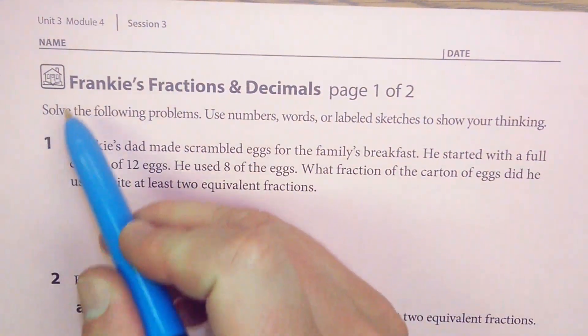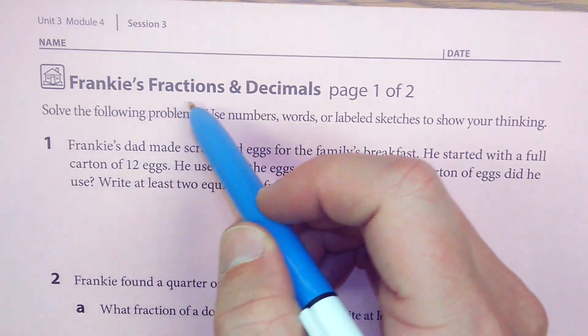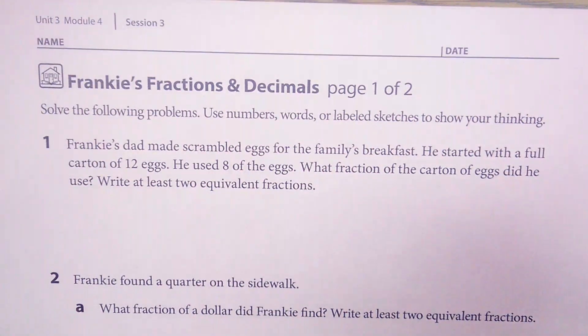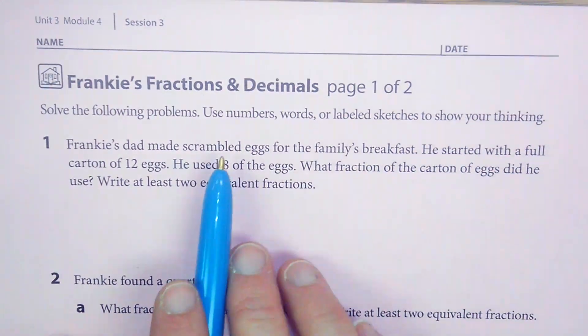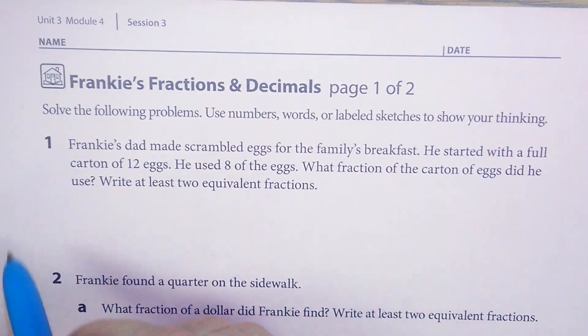This is Unit 3, Module 4, Session 3. This home connection is called Frankie's Fractions and Decimals. We are to solve the following problems, and we are to use numbers, words, and sketches to show what we're thinking about.